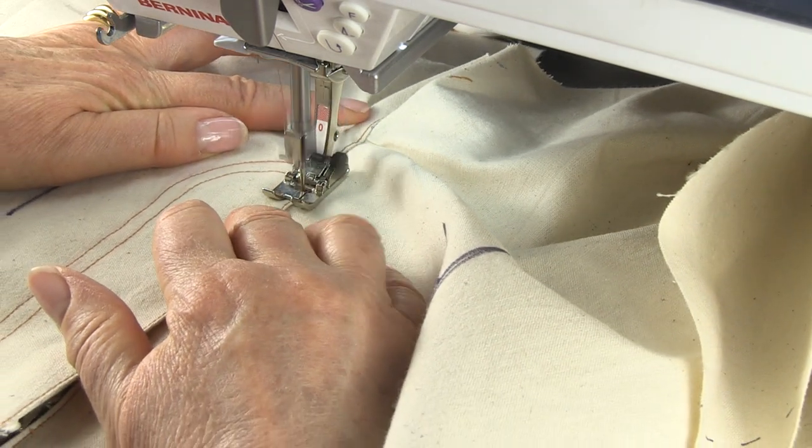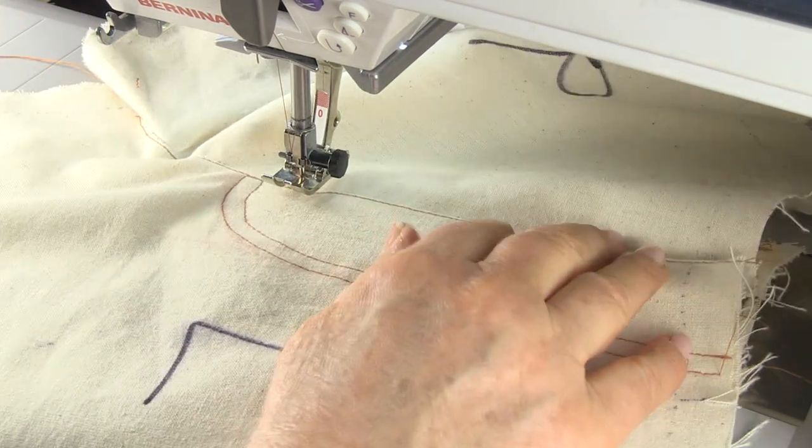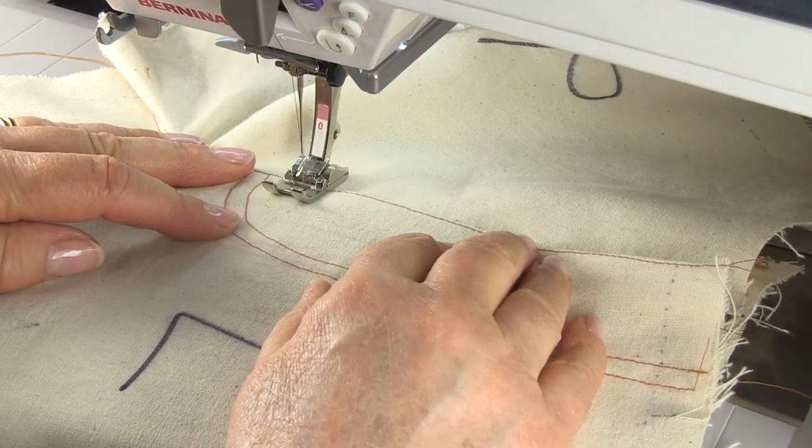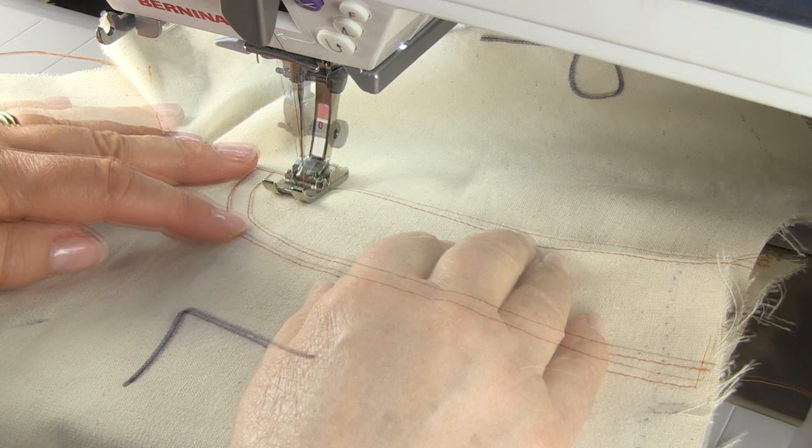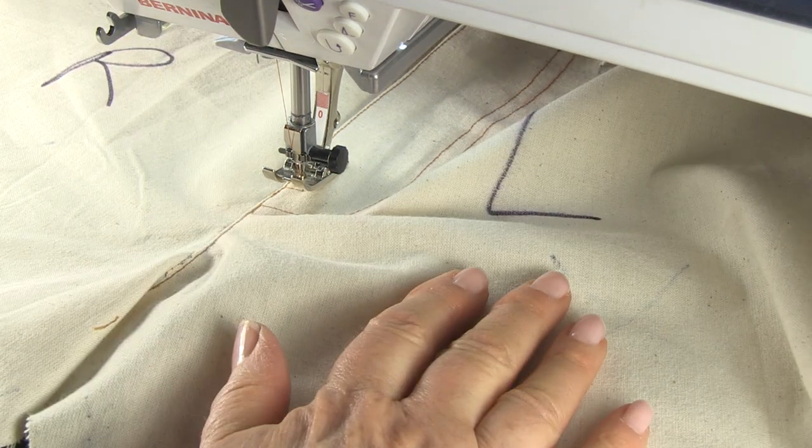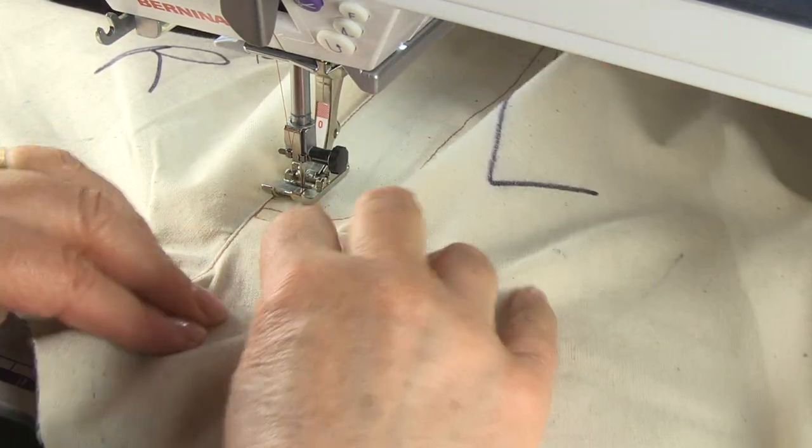From the crotch, topstitch close to the seam on the left front, up to and just beyond the previous stitching on the centre front fold. Take a few stitches across and then back to the end of the seam, giving you a nice double topstitch.